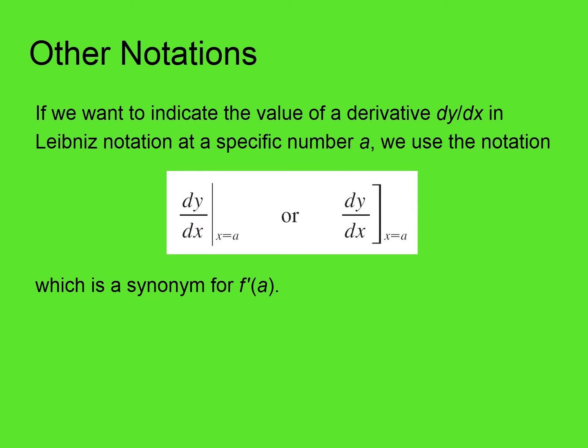If we want to indicate the value of the derivative dy/dx in Leibniz notation at a specific number a, we use a notation where we write dy/dx and then evaluate it at a number a. Or you could do it with a bracket — the only difference is these little tails. So that's a synonym for f prime of a.